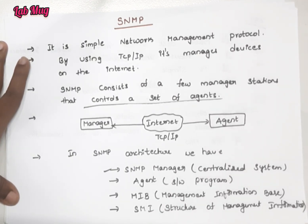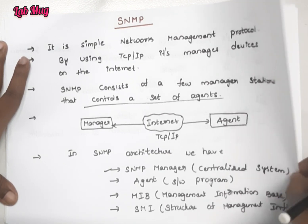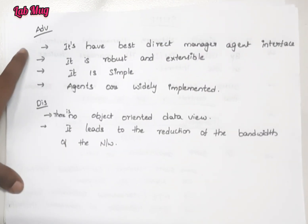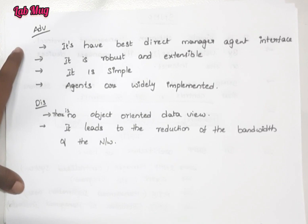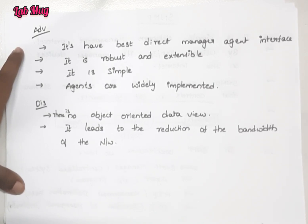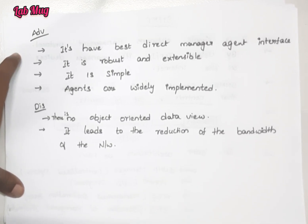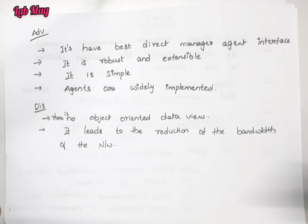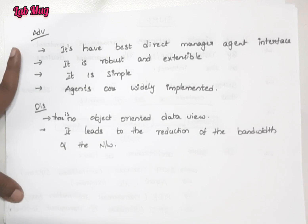The main purpose of SMI is to define the structure of management information. SMI is also associated with the Management Information Base. The approach of SMI defines how management information is structured and organized within the SNMP framework.